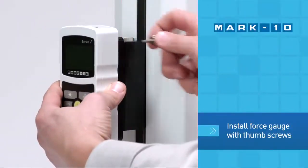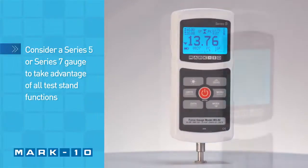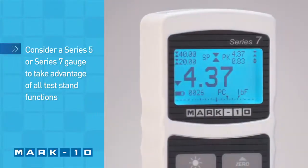Installing a force gauge is simple and it can be easily removed for service and calibration. Consider a series 5 or 7 gauge to take advantage of all test stand functions.